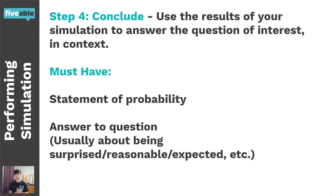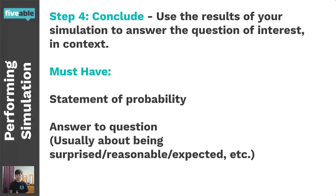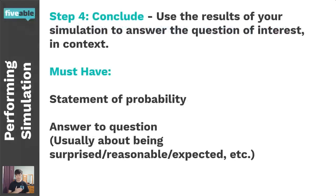Step four is Conclude. Analyze the data and ask: what did we gain? You need a statement of probability — the likelihood of the event occurring — and you must answer the question in context. You can use words like 'surprised,' 'reasonable,' or 'expected.' For example, on the Spanish quiz scenario, you might say the Spanish teacher would or would not be surprised based on the calculated probability. Statistics without context is meaningless, so always tie your conclusion back to the situation.